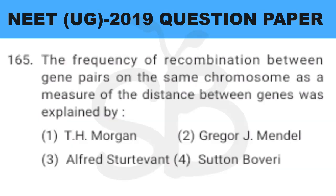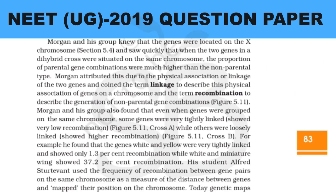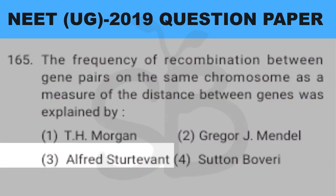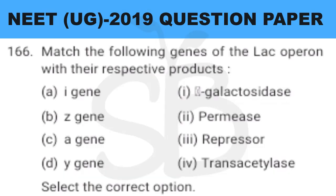Question number 165: the frequency of recombination between gene pairs located on the same chromosome as a measure of the distance between genes was explained by? This answer is from plus 2 biology chapter on principles of inheritance and variation, page number 83, under the linkage and recombination heading. There is some confusion between TH Morgan and Alfred Sturtevant. So the correct answer is option 3: Alfred Sturtevant.